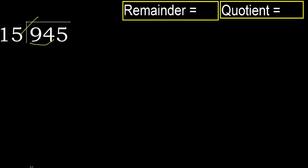15 multiplied by which number is nearest to 94 but not greater. 15 multiplied by 7 is greater, so multiplied by 6 gives 90 — ok, that is not greater.